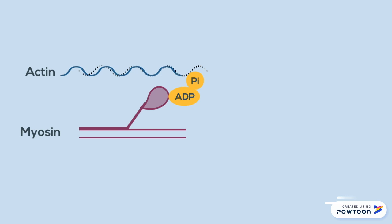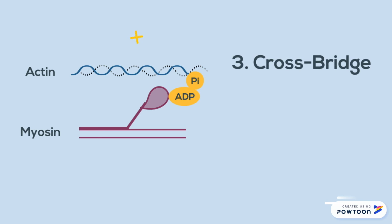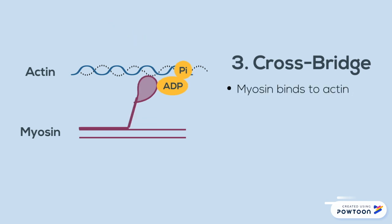Since the actin filament has undergone a conformational change and the myosin heads are in the correct position, a crossbridge can occur between the two filaments. The myosin heads bind to the actin filament.